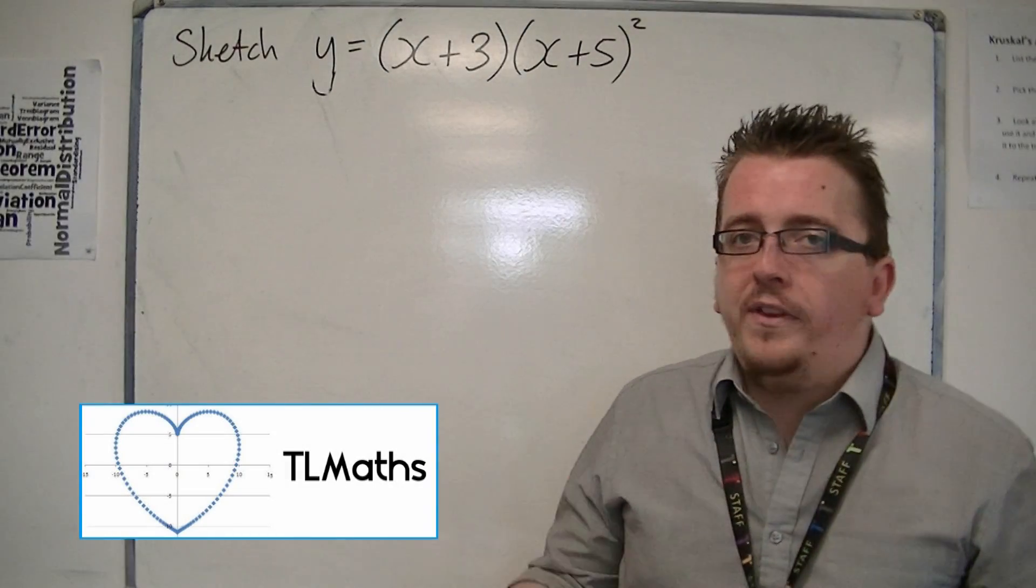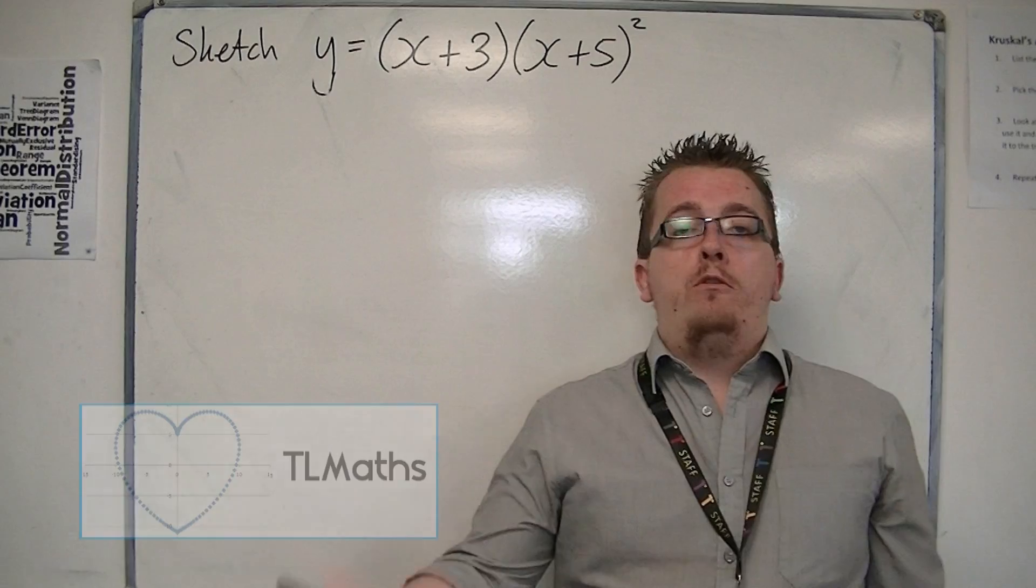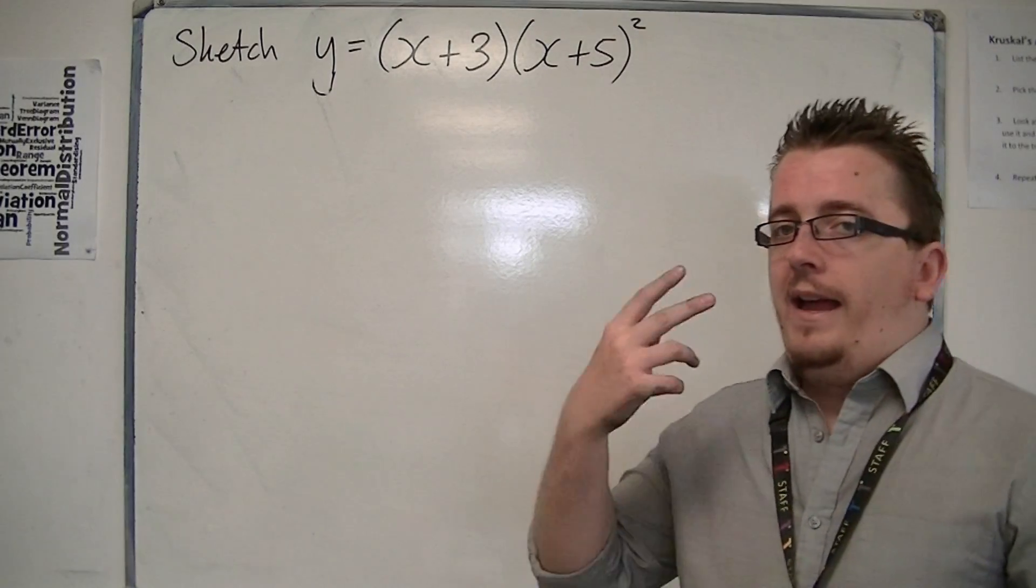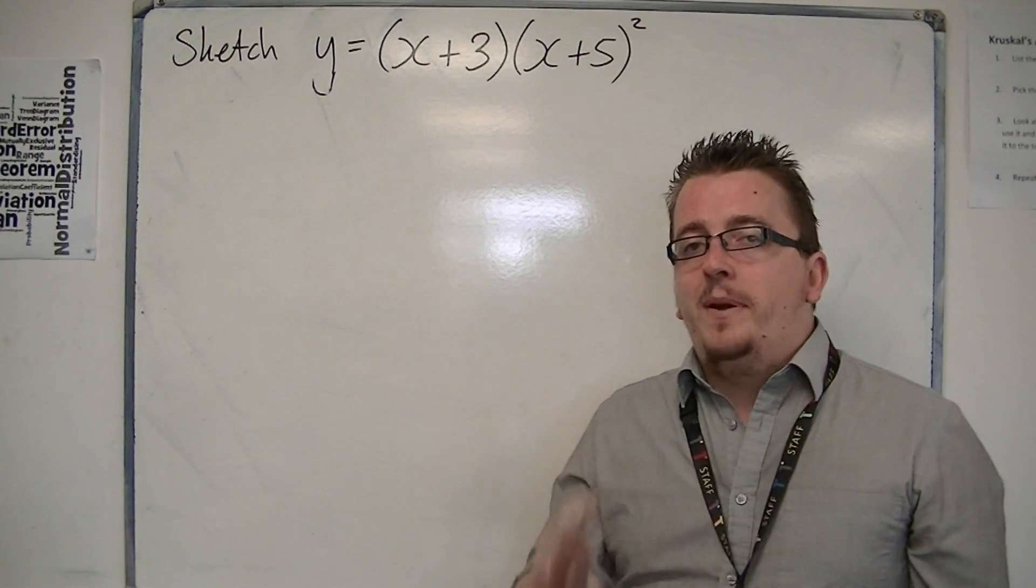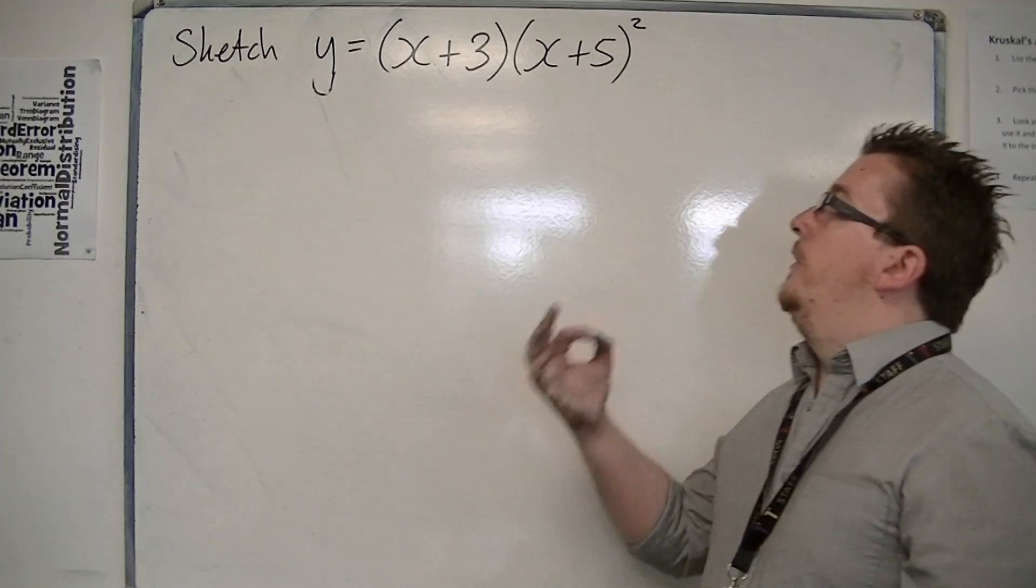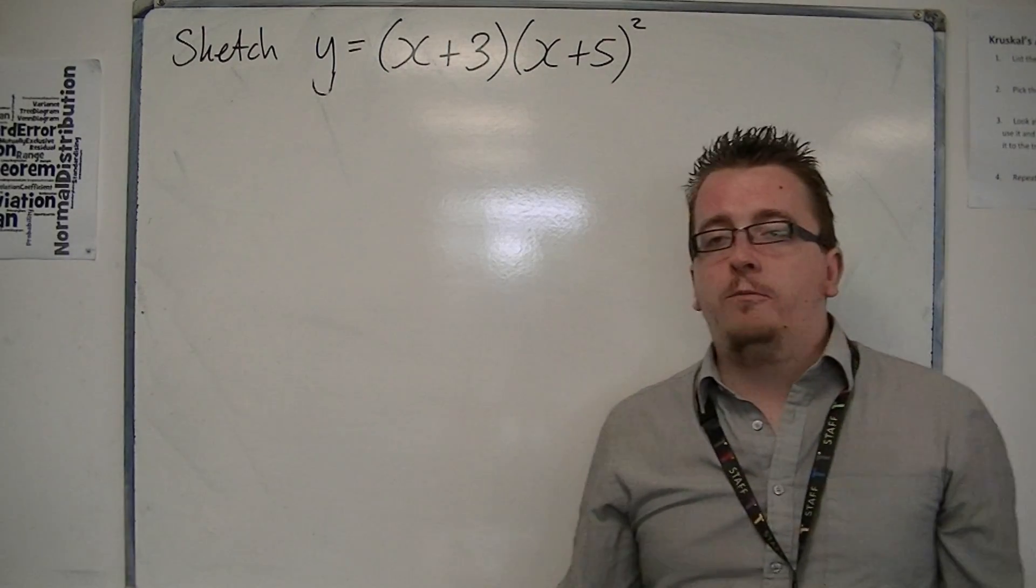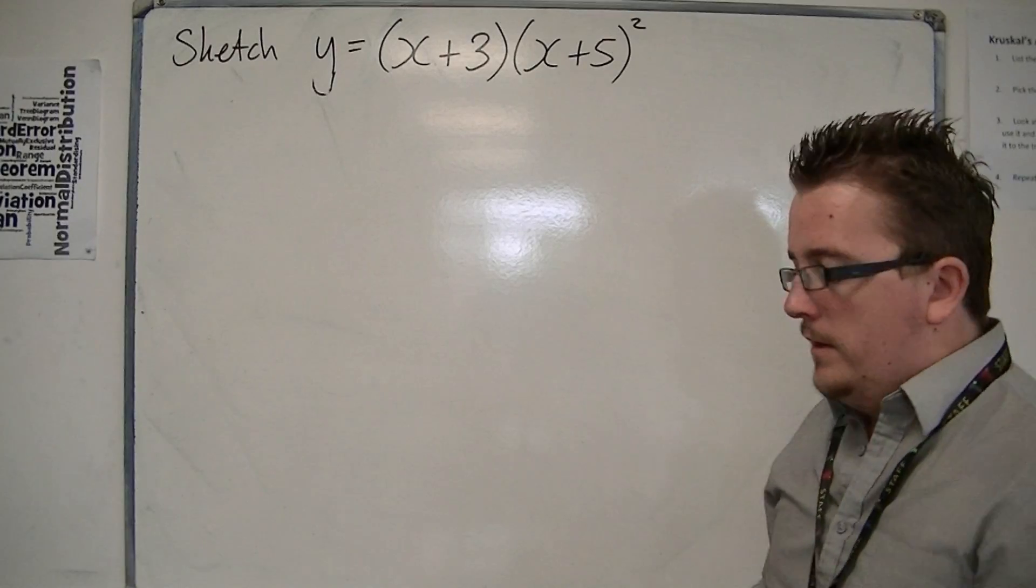In this video we're going to look at how you sketch a cubic where there are three linear terms. However, there is a repeated root. So two of the brackets are the same thing, you've got this x plus 5 all squared.